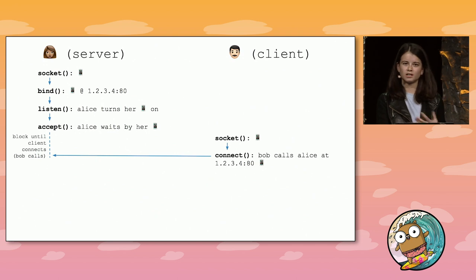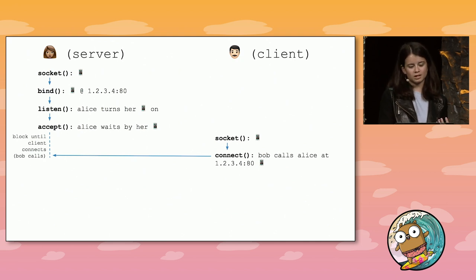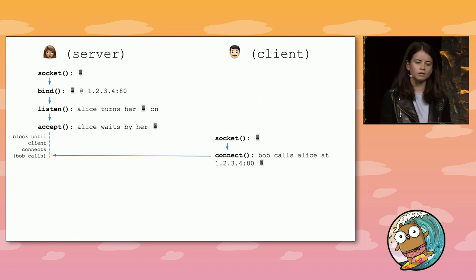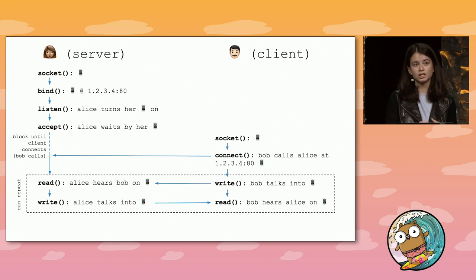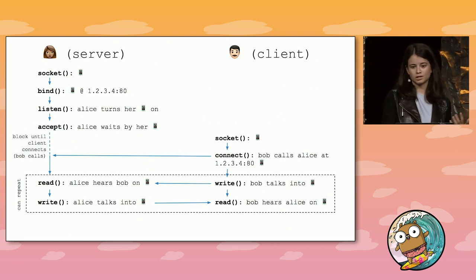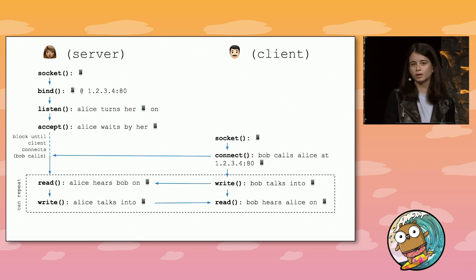Now that our server is ready to handle inbound connections, let's cover how a client establishes a connection with a server. For a client to connect to a server, it'll first call socket itself. Once the client gets a socket, it calls connect to the server at the address the server is bound to. These client syscalls are like Bob getting a phone for himself and calling Alice at her number. Both the client and the server can now write data to and read data from their respective sockets using the read and write system calls.